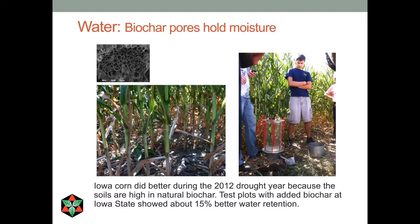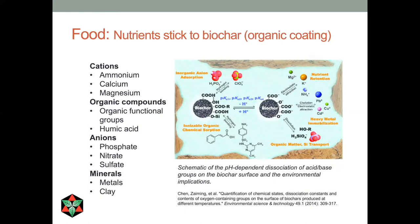Zooming out to the microscale, biochar works almost like a sponge — all those little pores can hold water. In Iowa, which already has a lot of natural biochar in the soil, during the 2012 drought year the corn was doing better than most other places. Test plots where even more biochar had been added showed even better water retention and growth. In general, it's a roughly linear relationship — the more biochar, the more water it holds.